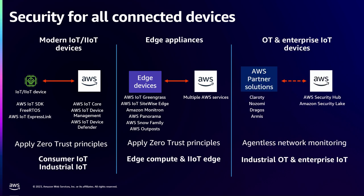Last but not the least, there is a category of devices for operational technology: programmable logic controllers, HMI systems, SCADA systems, as well as enterprise IoT devices — printers, scanners, smart TVs in your enterprise. The challenge with this class of devices is that it is difficult to put a security agent on these devices, and therefore the technique used for monitoring them is agentless network monitoring.